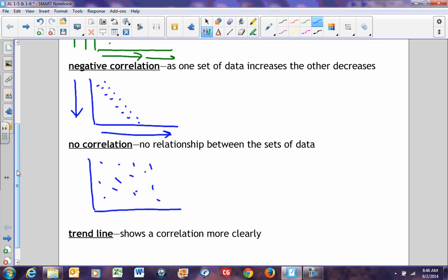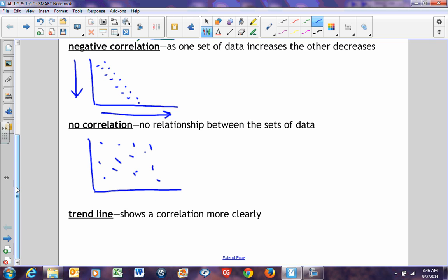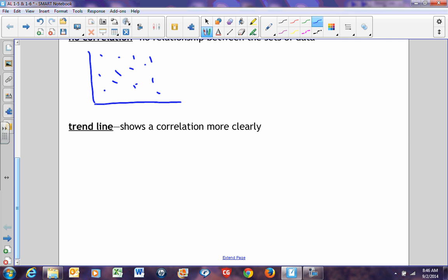A trend line shows a correlation more clearly. It shows somebody what is happening with your data. For example, if I was to have a correlation here, and if I was to do something like this, I can draw a trend line through this data.